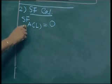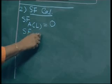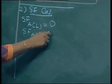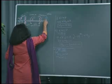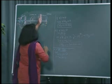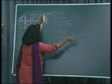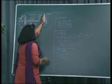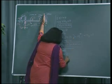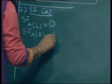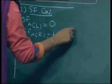Shear force at point A just right is 0. Then for just left of A, you can see a force of 10 kilo Newton intensity trying to push in the downward direction, so shear force is taken as positive — plus 10 kilo Newton.